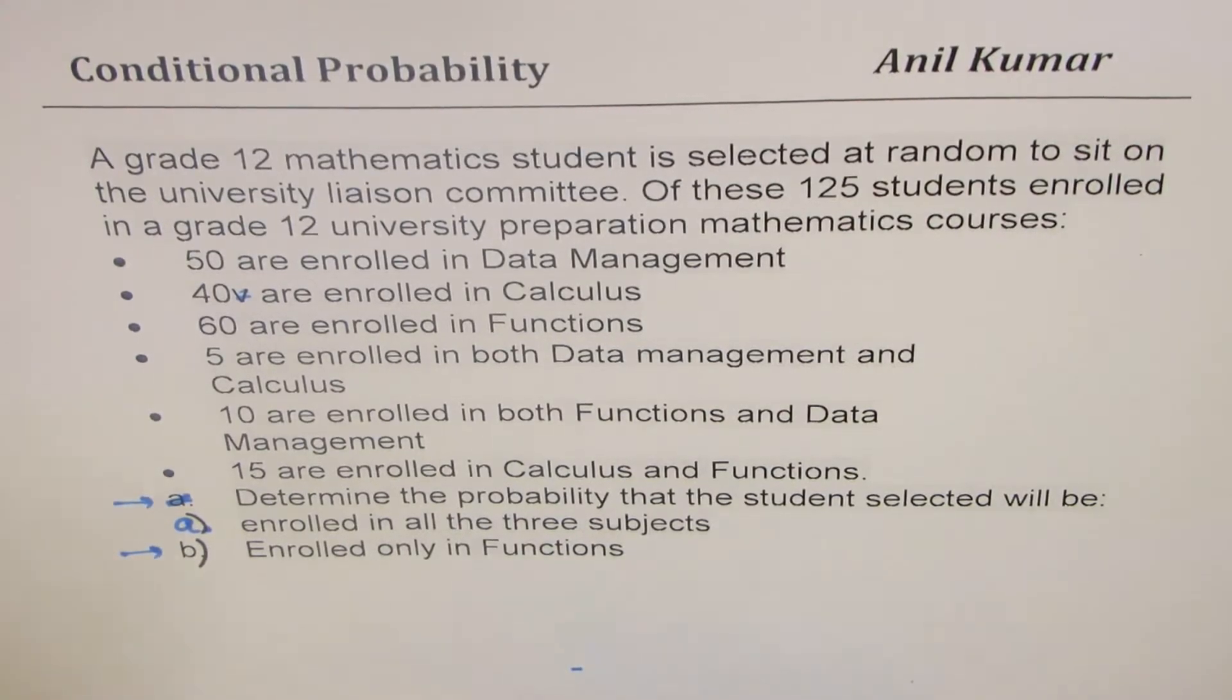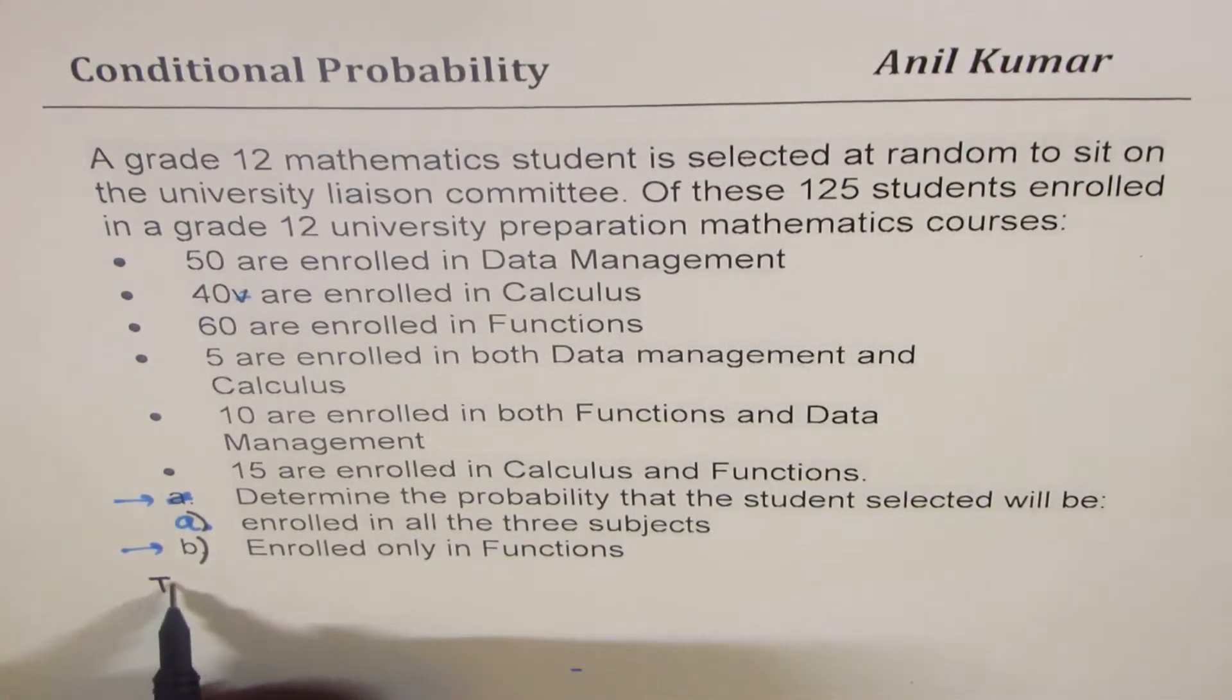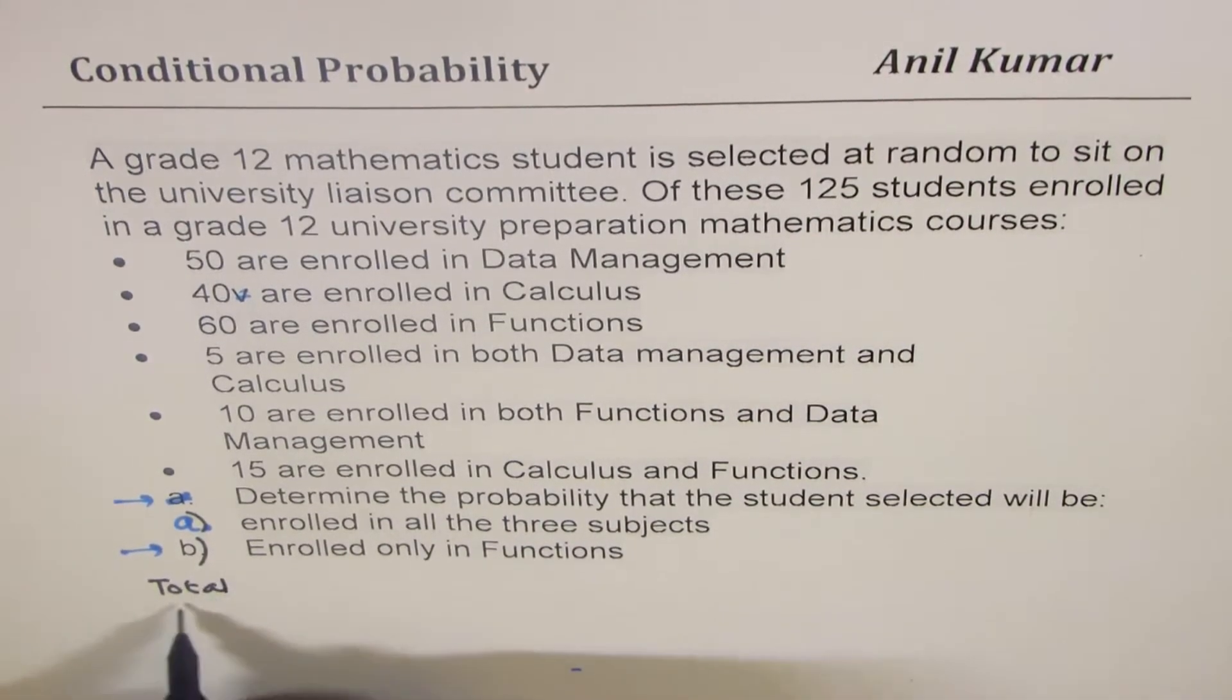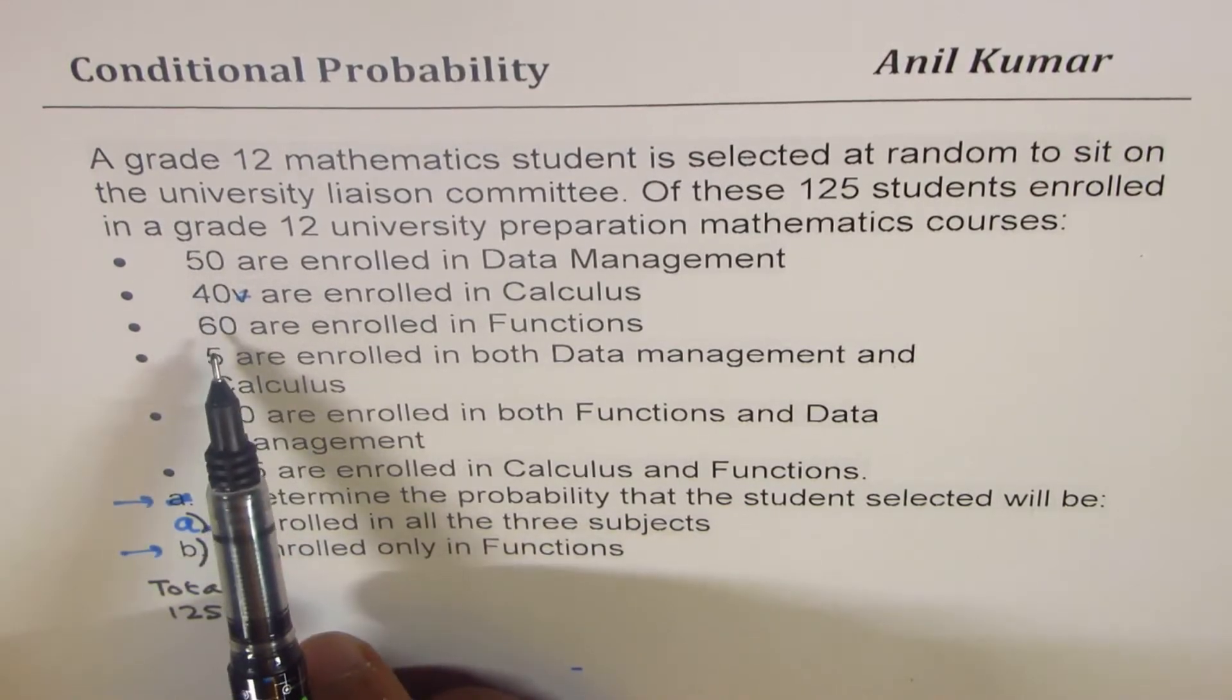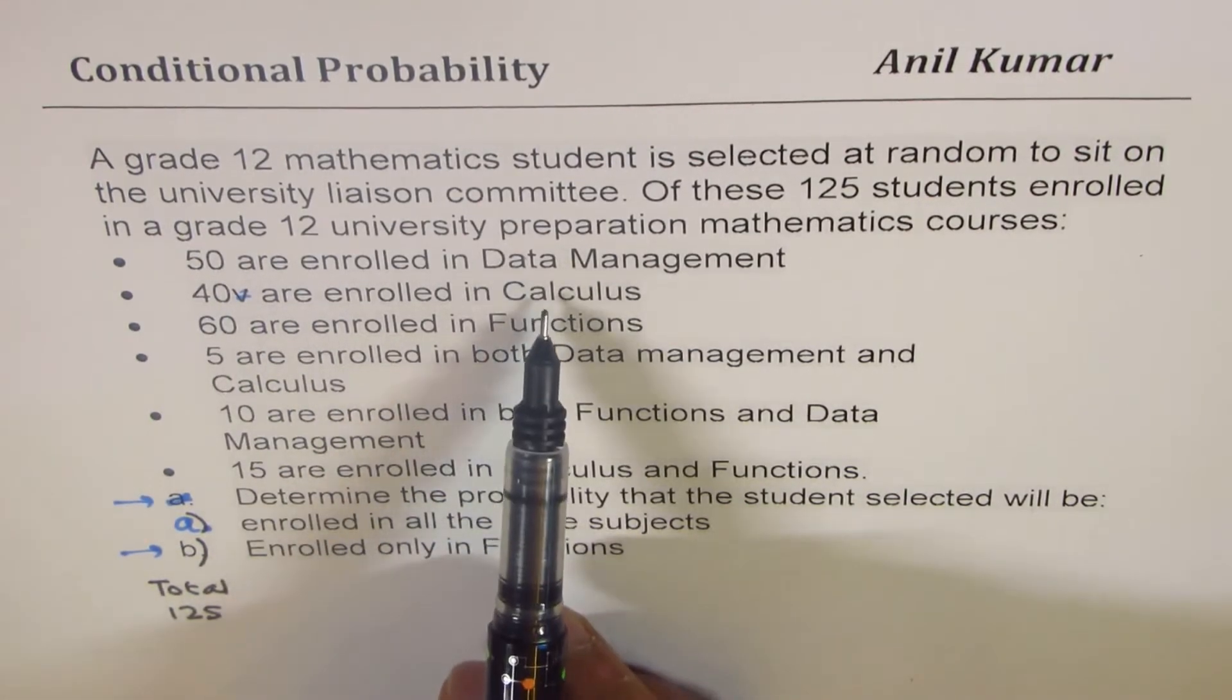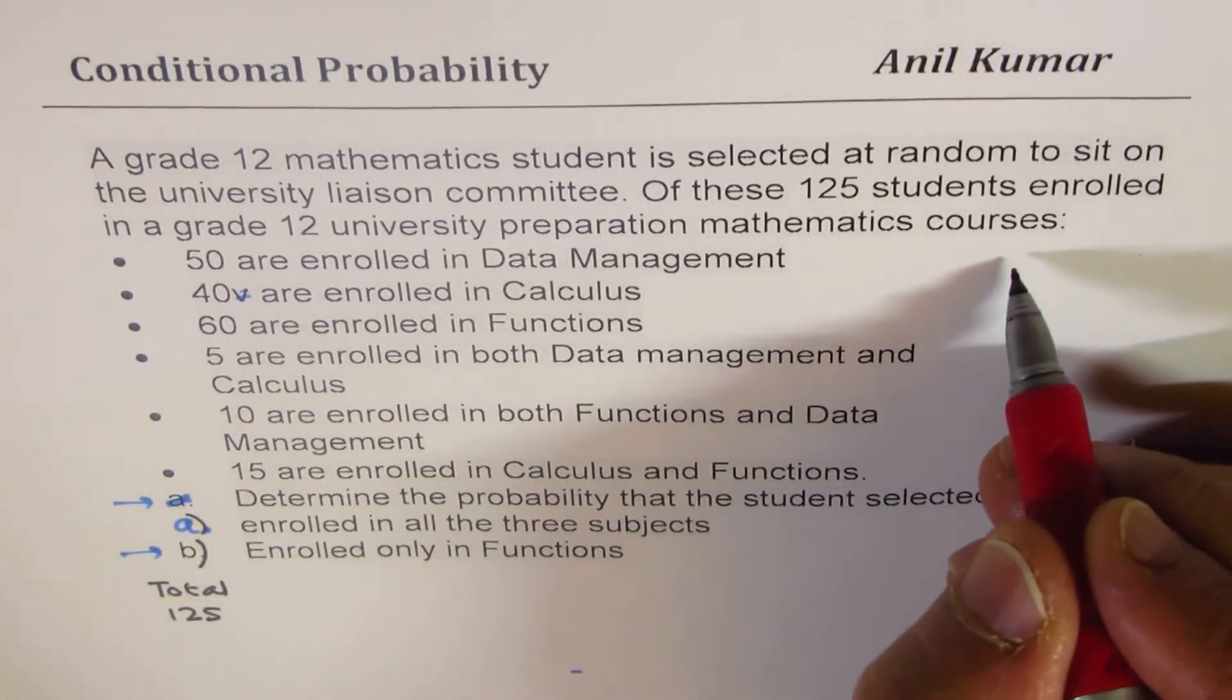Now here, we are given a total of 125 students. Out of these, in one subject each: data management, calculus and functions, so these are the three major subjects. Let's make three circles for these.